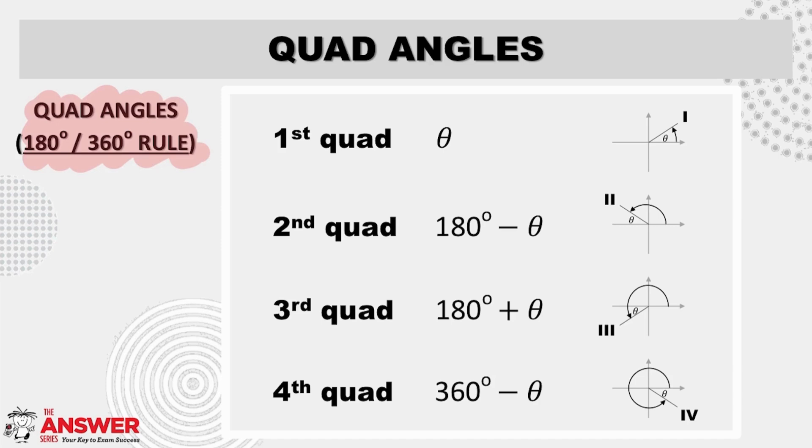The 180-360 degree rule, also known as quad angles, is used when angles are greater than 90 degrees. There are two important aspects to consider when working with this rule. The first is to consider which quad the angle lies in so that you can know whether the ratio is positive or negative. And the second is to identify the acute angle formed with the X axis.